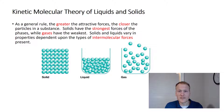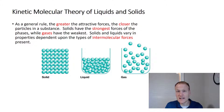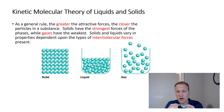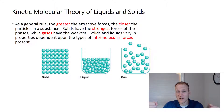In every substance — solid, liquid, or gas — we have molecules, and how those molecules interact with one another can give us insight into why they're in the current state at a certain temperature and pressure. If the intermolecular forces are very strong, those particles will tend to organize and create solids. If they're very weak, they'll tend to be gases. Liquids will be somewhere in the middle depending on the strength of those intermolecular forces.